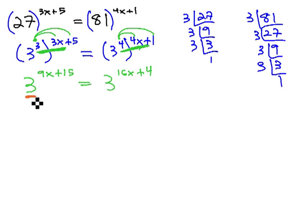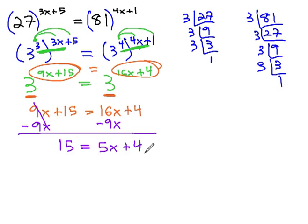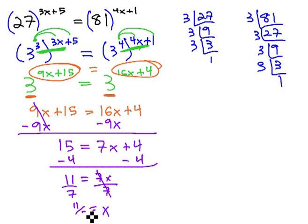When we do this, you notice we have the same base on both sides, so the exponents must also be equal. 9x plus 15 must equal 16x plus 4. We can solve by moving the x's to one side, subtracting 9x gives us 15 equals 7x plus 4. Then, we subtract 4 from both sides, giving us 11 equals 7x. Divide both sides by 7 and x is equal to the fraction, 11 sevenths.